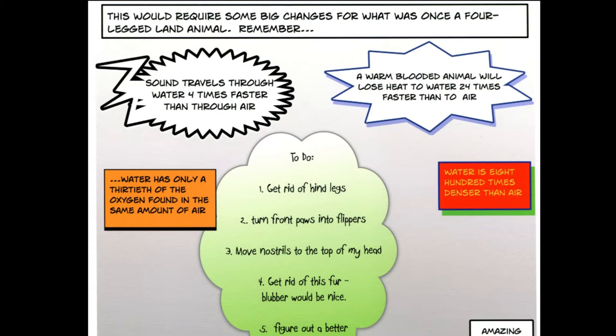Here are some things to remember. Sound travels through water four times faster than through air. A warm-blooded animal will lose heat to water 24 times faster than to air. Water has only a 13th of the oxygen found in the same amount of air. And water is 800 times denser than air.